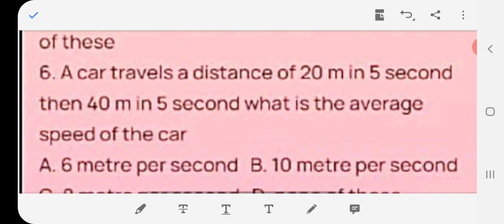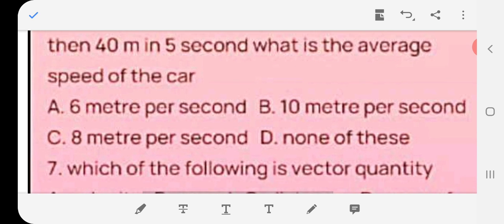A car travels a distance of 20 meter in 5 seconds, then 40 meter in another 5 seconds. What is the average speed of the car? Distance equals total distance upon total time. 40 plus 20 equals 60, 5 plus 5 equals 10. 60 upon 10 is equal to 6 meter per second. The answer is A.